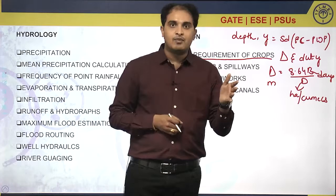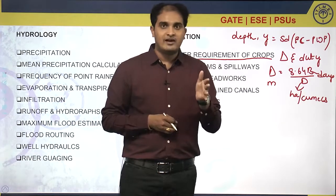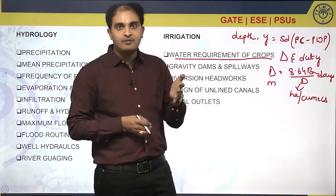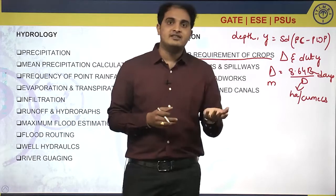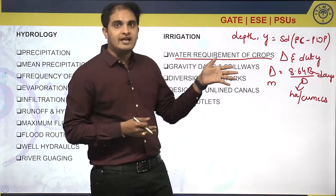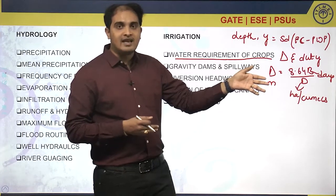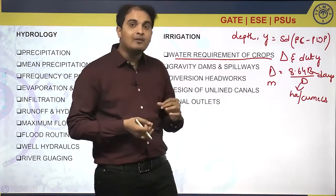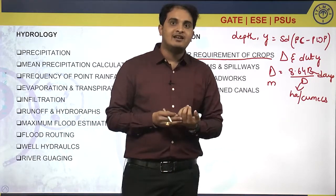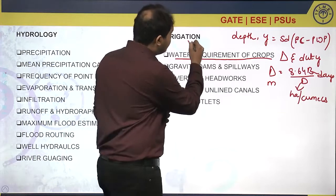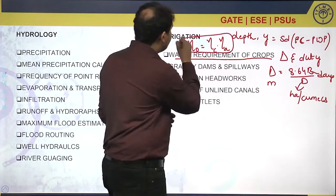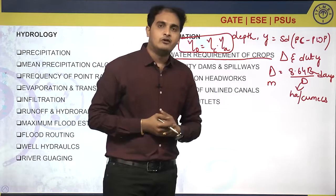For example, if 100 cumecs of water is supplied from the canal and 90 cumecs is received by the field, then 10 cumecs is lost — giving a conveyance efficiency of 90%. If out of that 90 cumecs, only 81 cumecs is applied to the root zone of the plants, the remaining 9 cumecs is lost during application. This efficiency is called application efficiency. The overall efficiency equals conveyance efficiency multiplied by application efficiency. This is an important point to focus on in water requirement of crops.